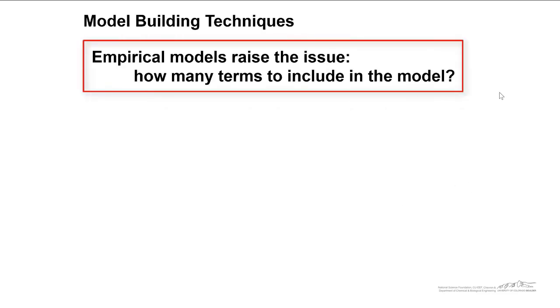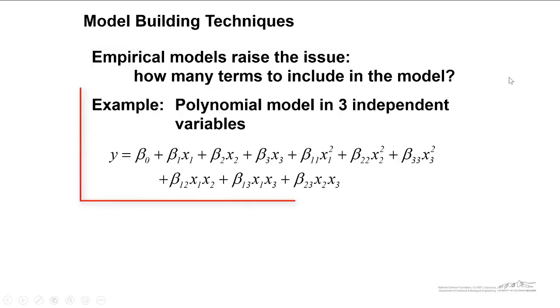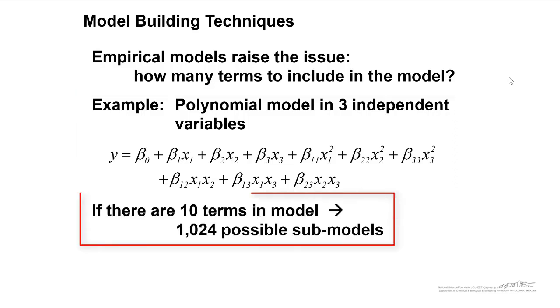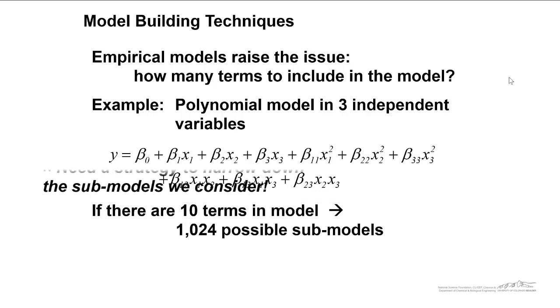Empirical models raise the issue, how many terms should you include in your model? For example, if we had a polynomial model in three independent variables, we could potentially put together a model of this form, where we've got ten different terms, including our intercept. If there are ten terms in the model, it turns out that there are 1,024 possible submodels, so you can include some of them, not include others, so there's many, many possibilities.